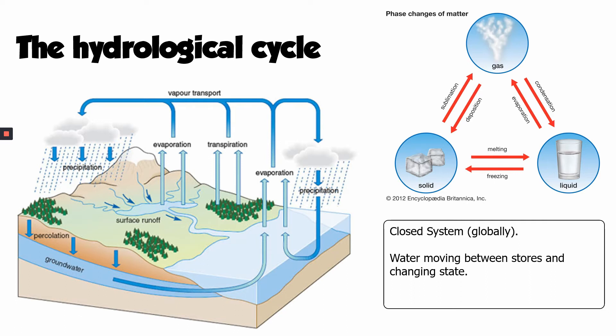Over millions of years, the Earth has reached a dynamic equilibrium whereby the amount of water in the atmosphere, oceans, and groundwater isn't really changing very much. You could argue that human activity — things like climate change and extracting groundwater — does disrupt that equilibrium. But broadly speaking, the amount of water falling as precipitation is equal to the amount returning to the atmosphere through evaporation and transpiration, so these processes are in balance in the long term.